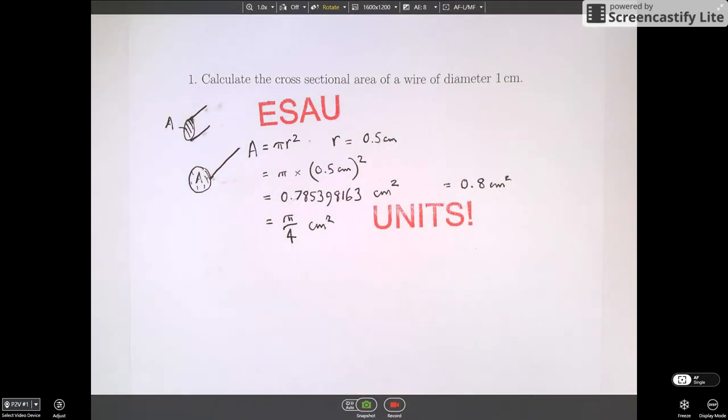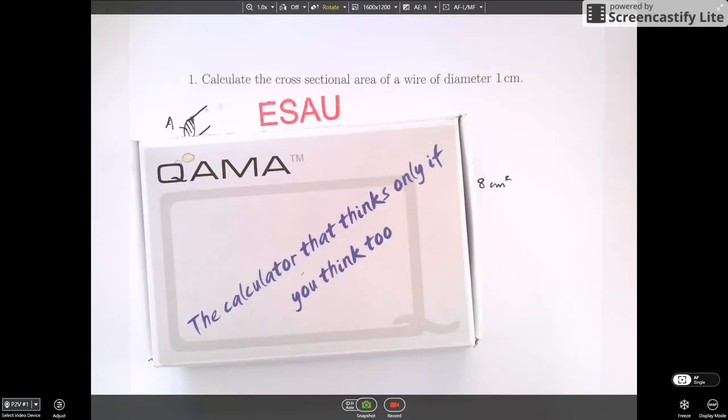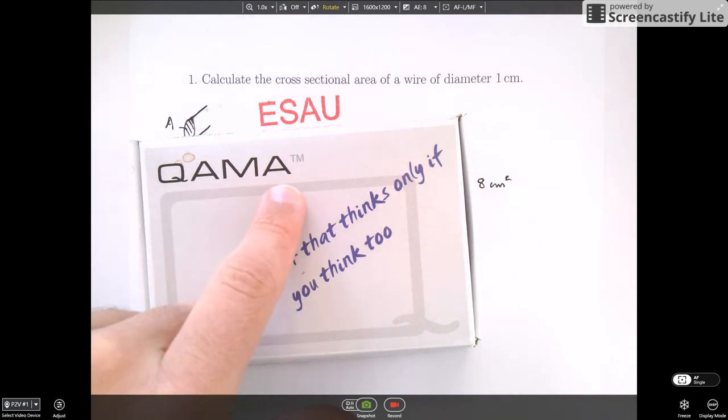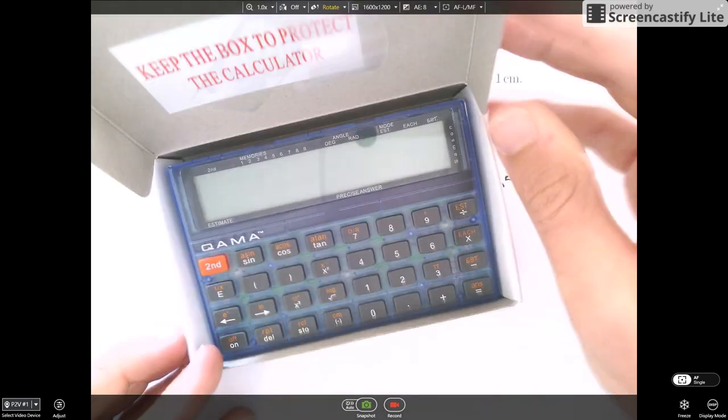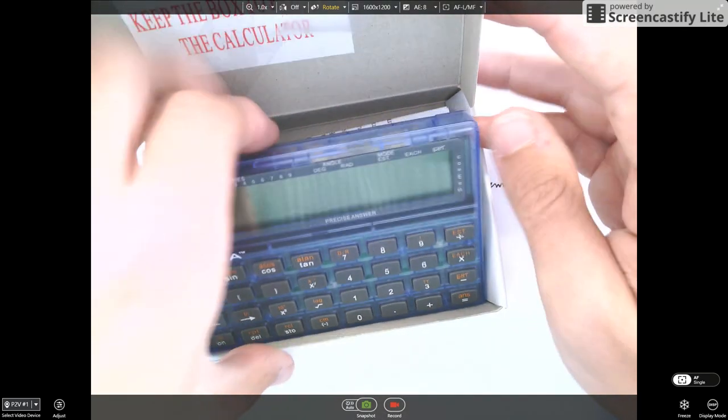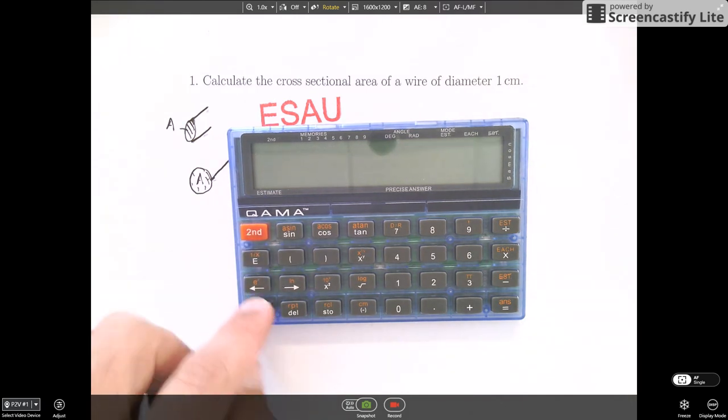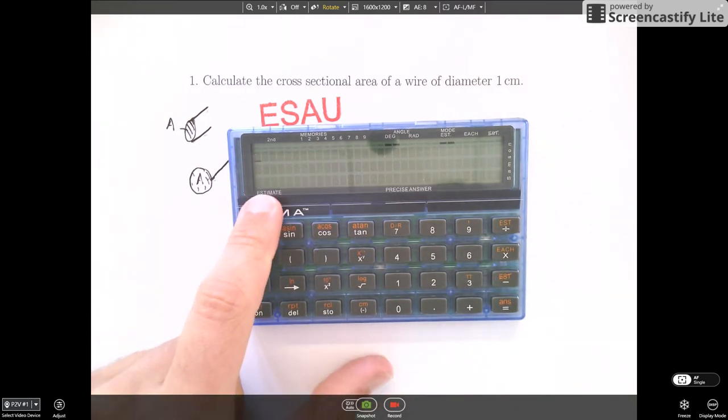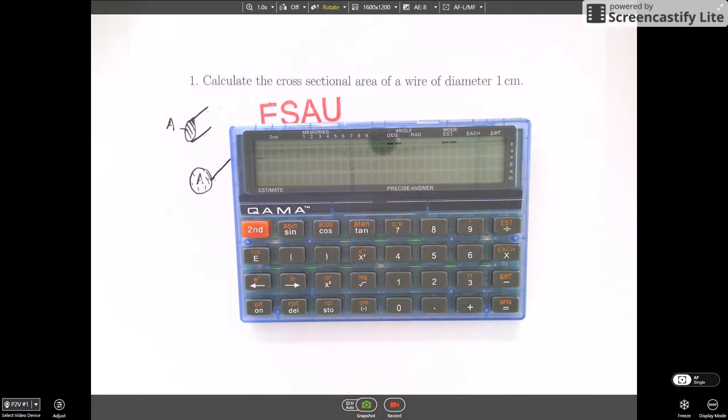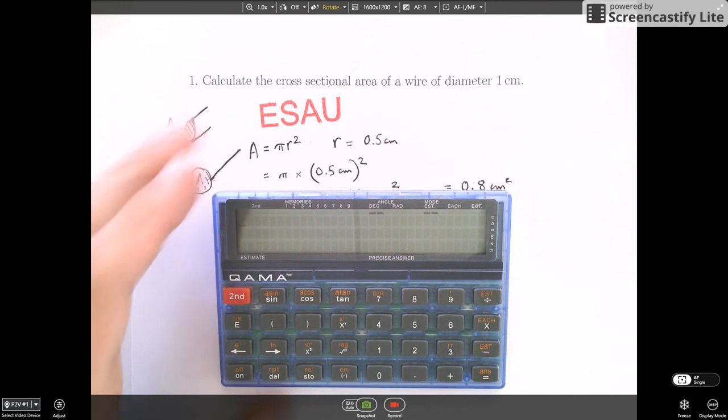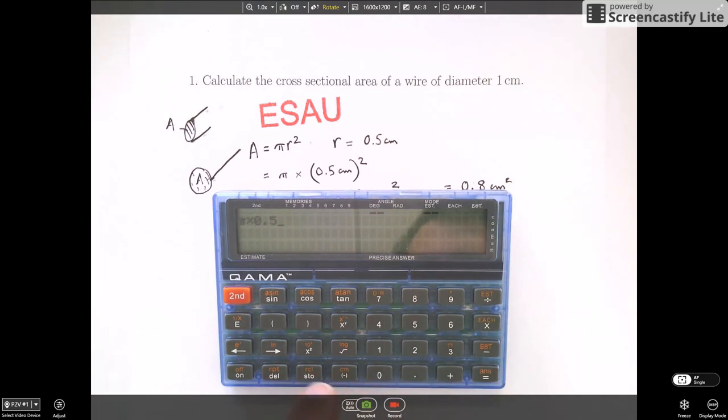So now let me show you the QAMA calculator. So if a student uses this calculator, the QAMA stands for quantitative approximate mental arithmetic. It's a regular scientific calculator when you get it out of the box. So it has all of the usual functions that you'd expect to find on a scientific calculator, except that you'll notice that when you switch it on, it has an estimate area and a precise answer area.